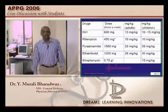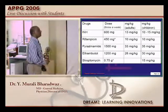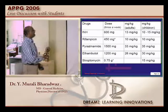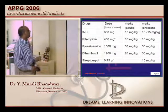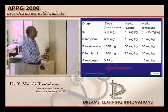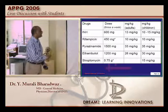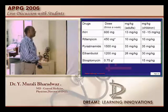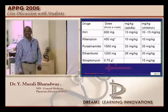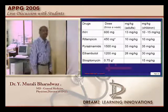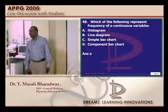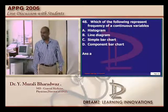As a house surgeon in pediatrics, you need to know the mg per kg doses in the pediatric and adult population: INH 10–15, Rifampicin 10, Pyrazinamide 35, Ethambutol 30, and Streptomycin 15 mg per kg. These should not be forgotten.